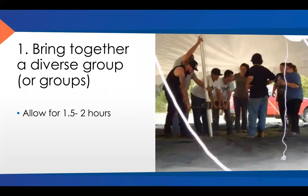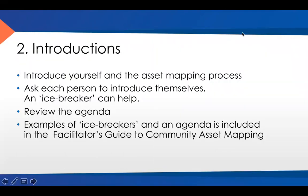So the nuts and bolts — how do you run a community asset mapping session? You bring together a diverse group of people from your community. Give yourself up to two hours — after two hours people start getting antsy, so you want to keep everybody energized. Try to get a very good cross-section of people in your community. Then do introductions: everybody has a chance to introduce themselves, the facilitator walks through the asset mapping process. You can do an icebreaker — a simple one is having people talk to the person next to them for a couple of minutes and then introduce each other. Then review the agenda; it's always good to review an agenda prior to any session.